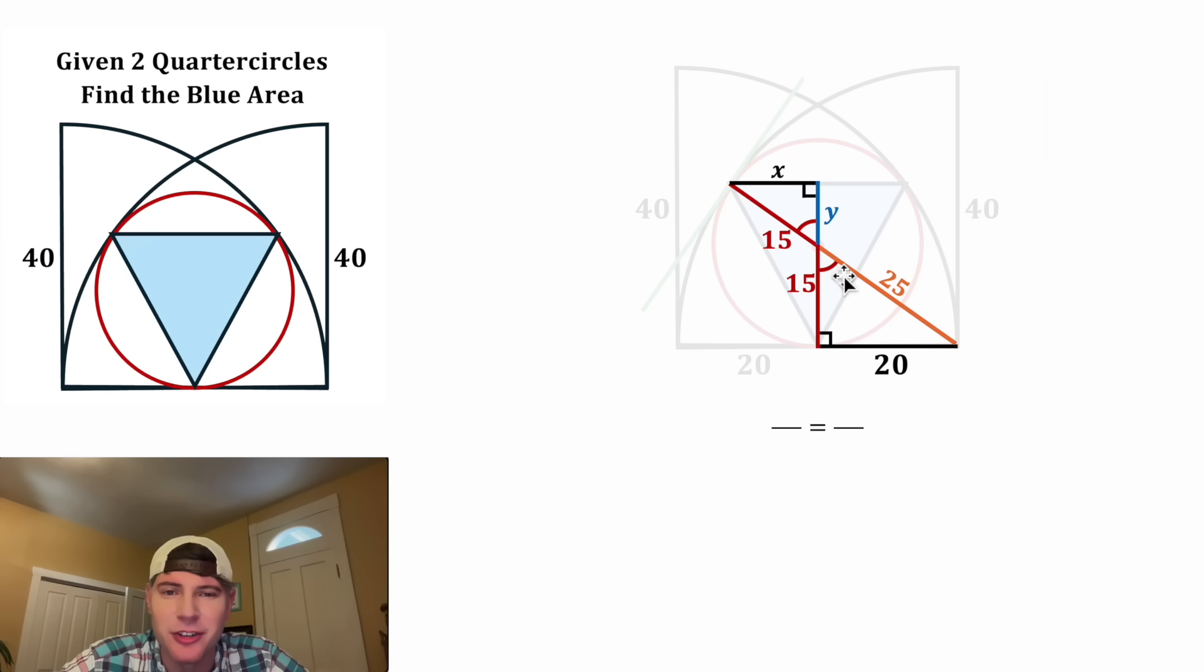And we can set up a proportion. Let's use the sides that touch the vertical angles. It'll be the leg Y over the hypotenuse 15 is equal to the leg 15 over the hypotenuse 25. And then from here, we can cross multiply. 25 times Y is 25Y. And 15 times 15 is 225. So we have 25Y equals 225.